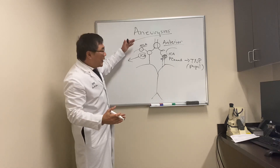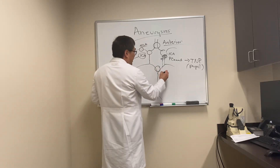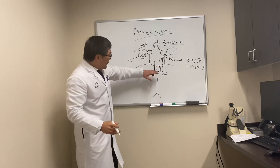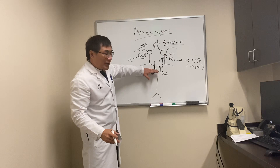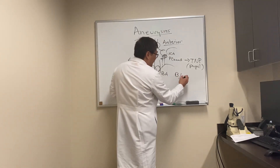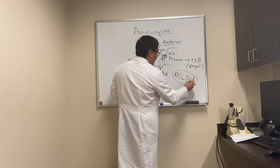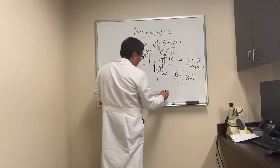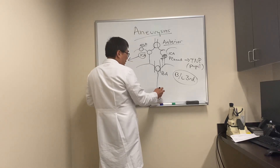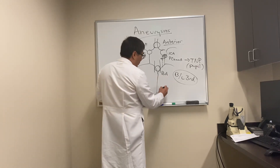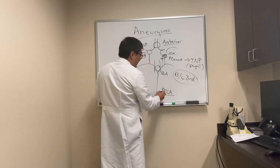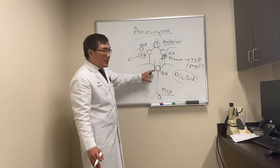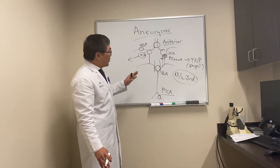MCA aneurysms we don't typically see, but if one bleeds it can cause a homonymous hemianopsia. The basilar tip aneurysm we do see — and unlike the PCOM, because both third nerves are leaving the midbrain in the interpeduncular cistern, bilateral third nerve palsies can occur from a basilar aneurysm or from its treatment. Vertebral aneurysms can produce disease from downstream ischemia like Wallenberg syndrome from PICA involvement, nystagmus, or other ischemic events.